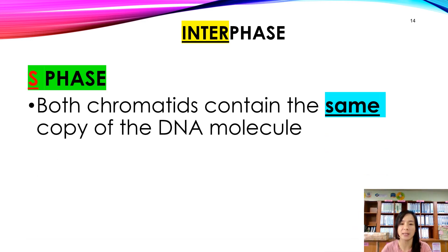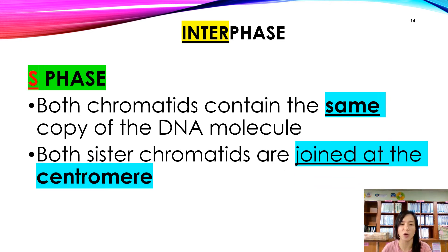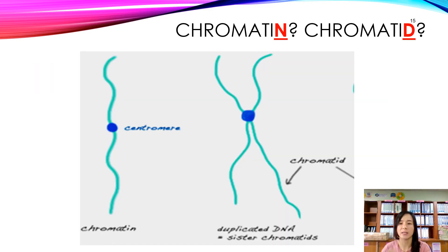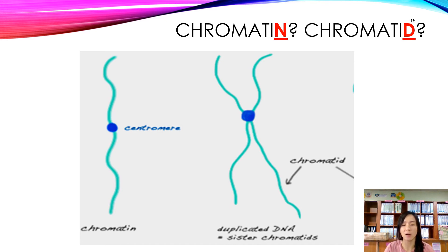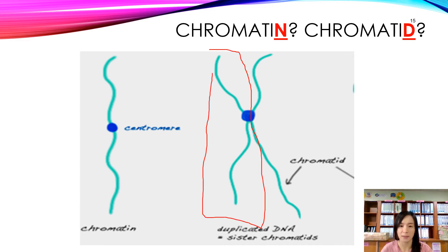Both chromatids contain the same copies of DNA molecules, and both sister chromatids are joined at the centromere. When the chromosome is in its thread-like form we call it chromatin, and when the chromosome undergoes replication we call it a duplicated chromosome. The duplicated chromosome is made up of two chromatids — this is one chromatid and this is another chromatid.